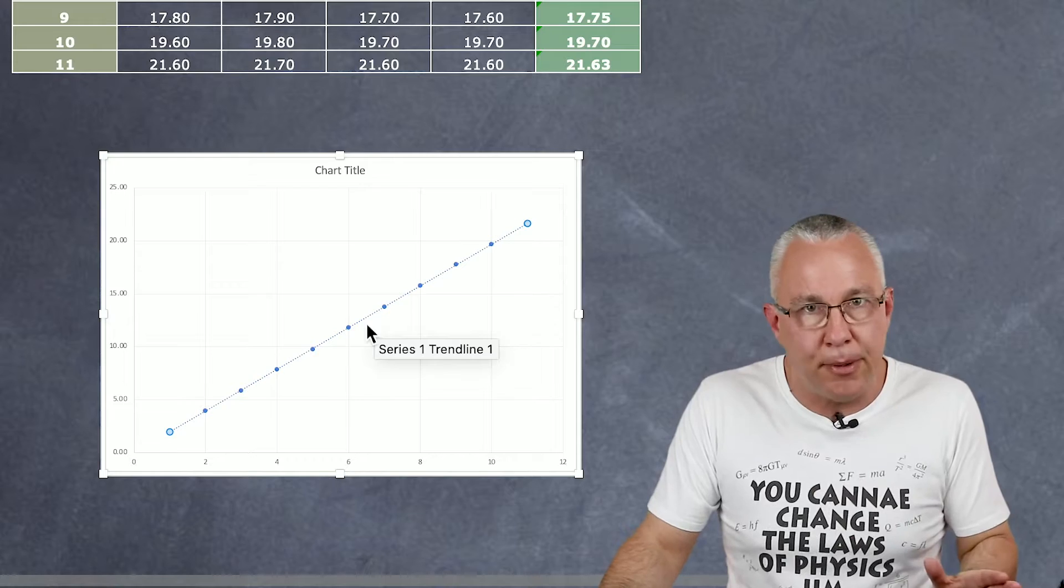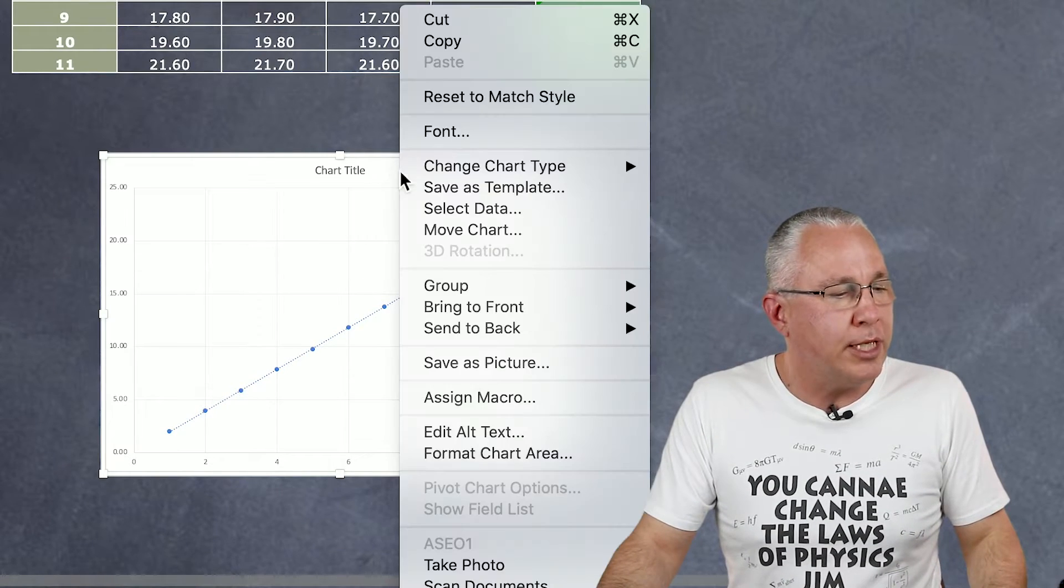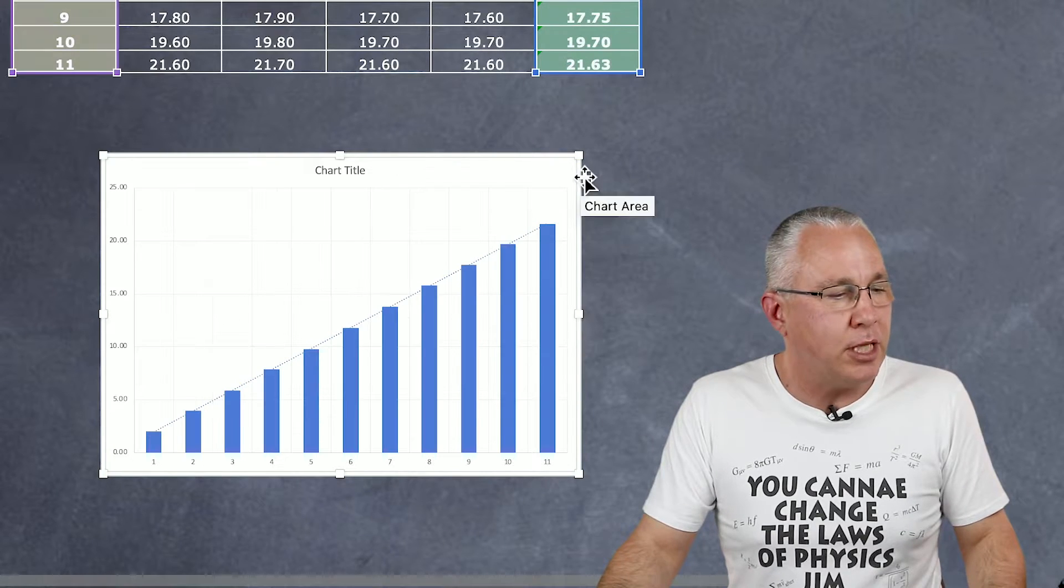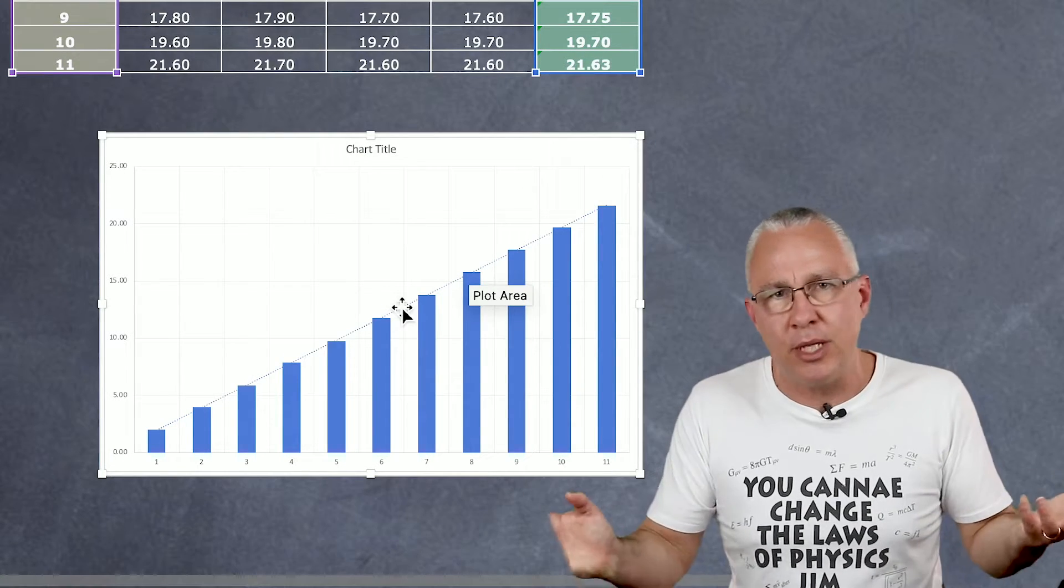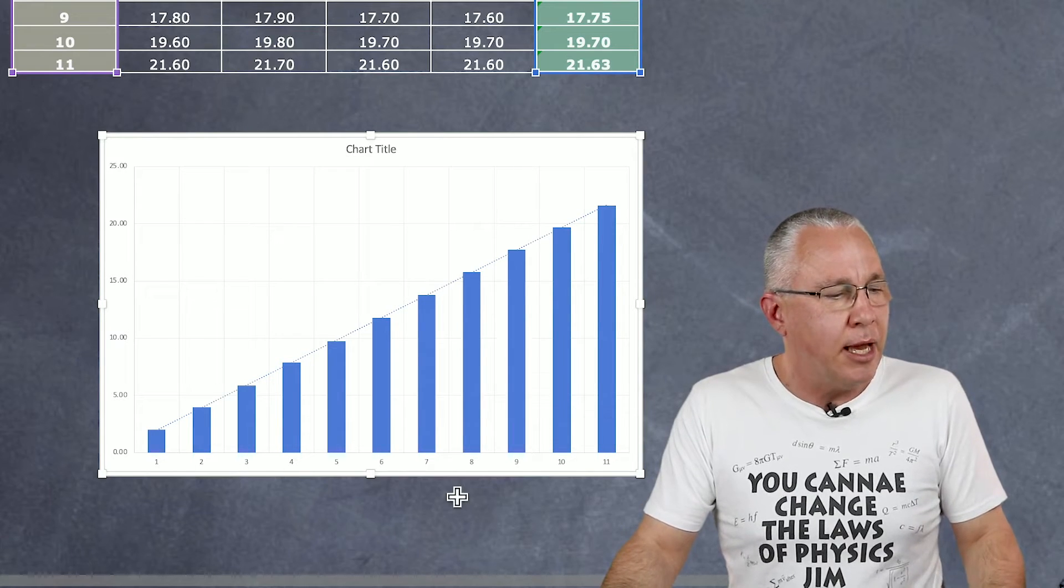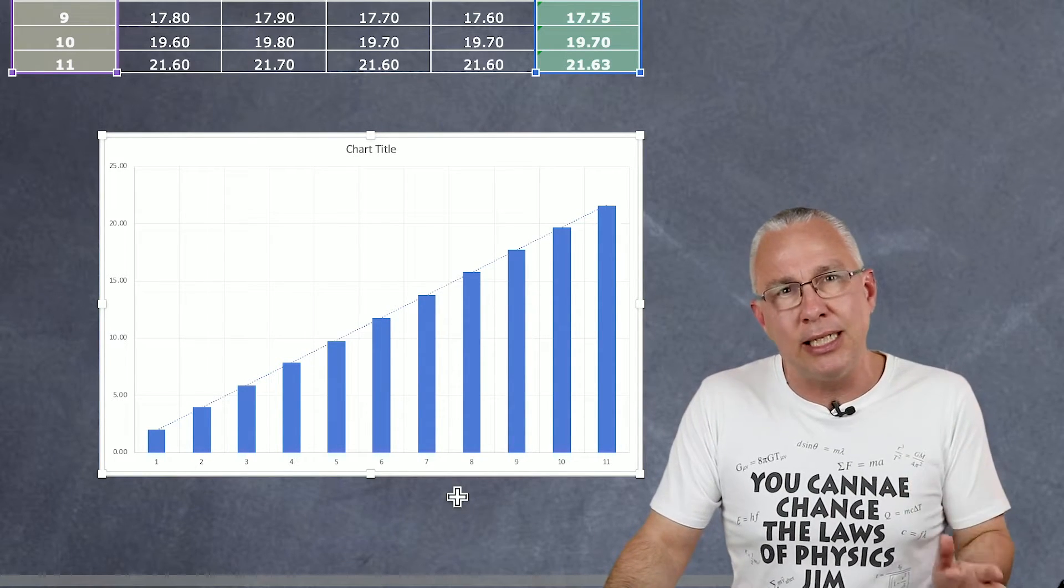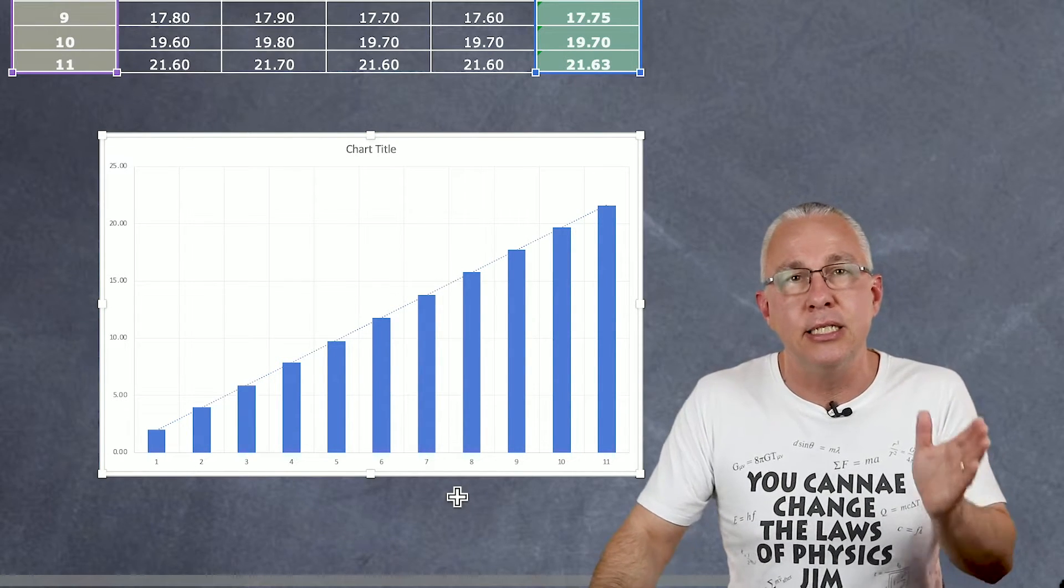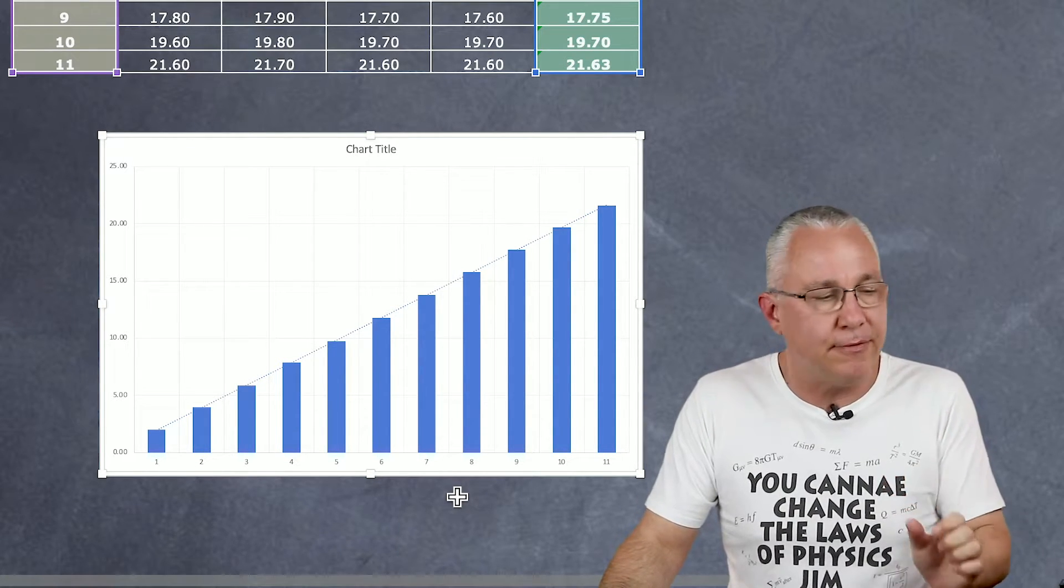In this case this is inappropriate because my data is discrete, it can only have specific values. So a line graph is not appropriate. I'm going to change the chart type into a column graph. I still have a trend but now I'm making it absolutely clear you can't have values in between. So a bar graph is appropriate where the data is discrete, it has set values.